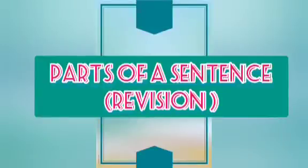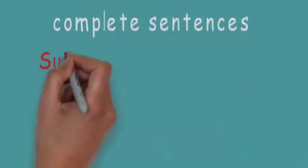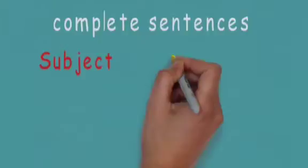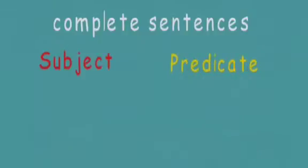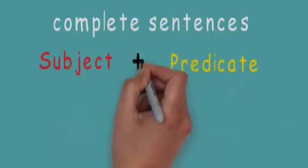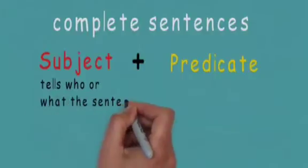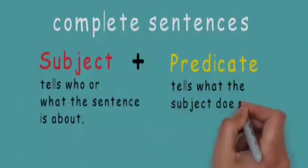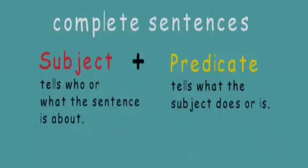Hello students, today we are going to learn the parts of a sentence, i.e. subject and predicate. Complete sentences are made of two parts: subject and predicate. Subject tells who or what the sentence is all about. Predicate tells what the subject does or is.